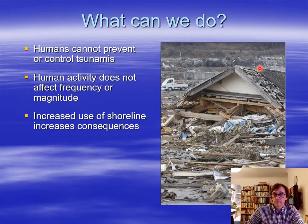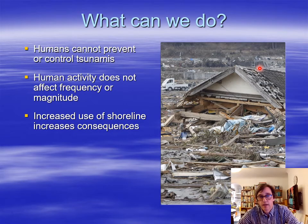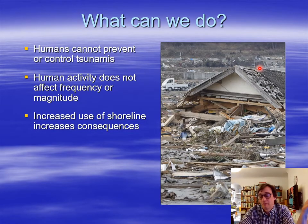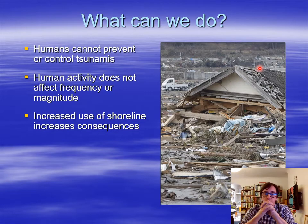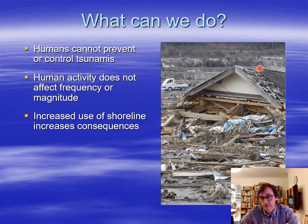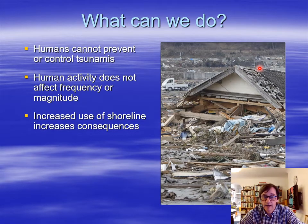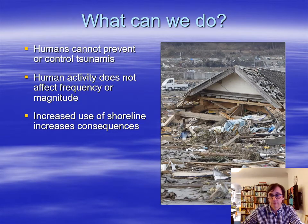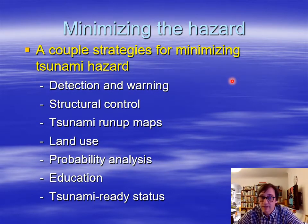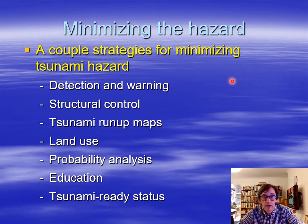Finally — what can we do? First of all, it has to be said: humans, society cannot prevent or control tsunami. We can't stop a tsunami from happening from these larger seabed earthquakes or very large submarine landslides. Human activity does not affect the frequency or magnitude of the tsunami. However, increased use of the shoreline increases the consequences — if you have a higher density of population at very low elevations and use of that shoreline, therefore there'll be greater consequential detrimental consequences when a tsunami wave hits. A couple of strategies for minimising tsunami hazard: detection and warning — you detect a tsunami, then put out a tsunami warning for evacuation. Structural control — both roadways along evacuation routes, but also strengthening buildings, though you really need very strong buildings to withstand a tsunami wave.